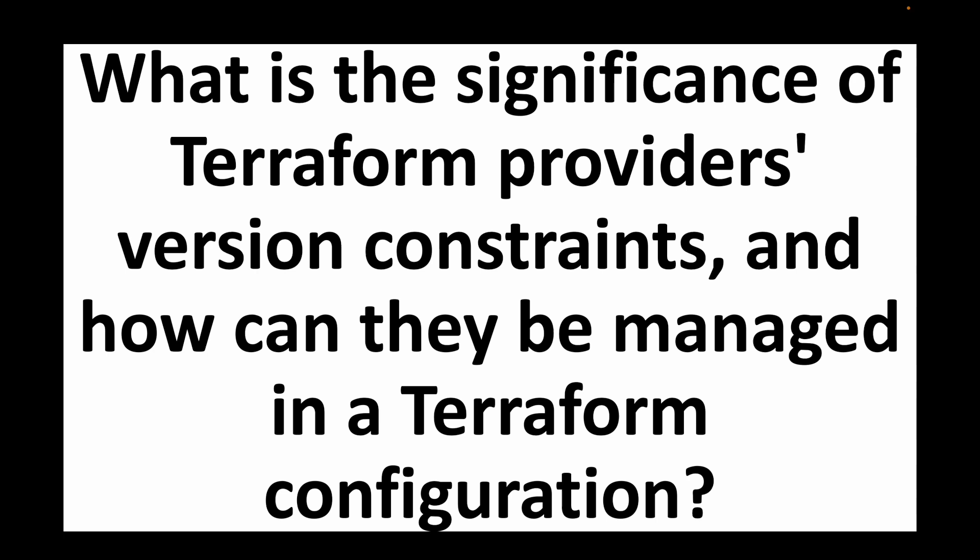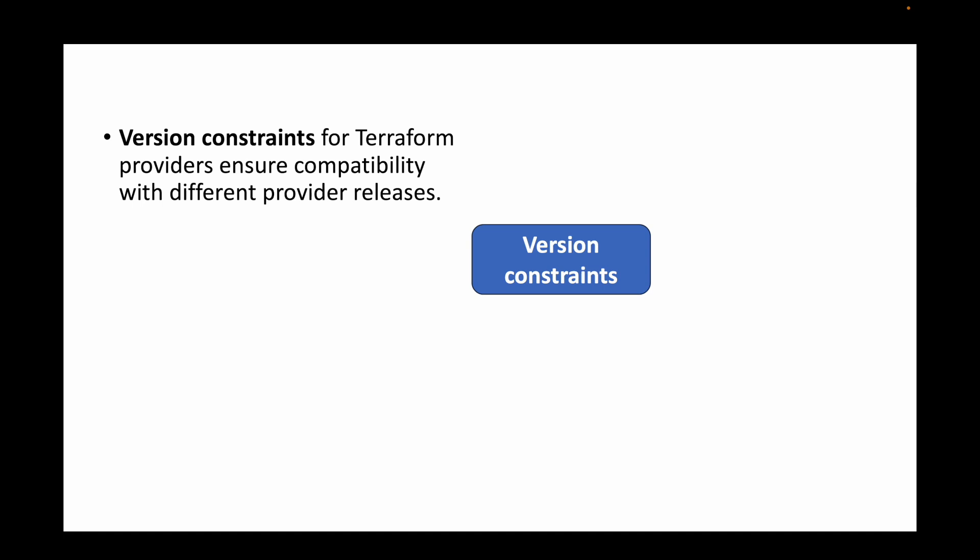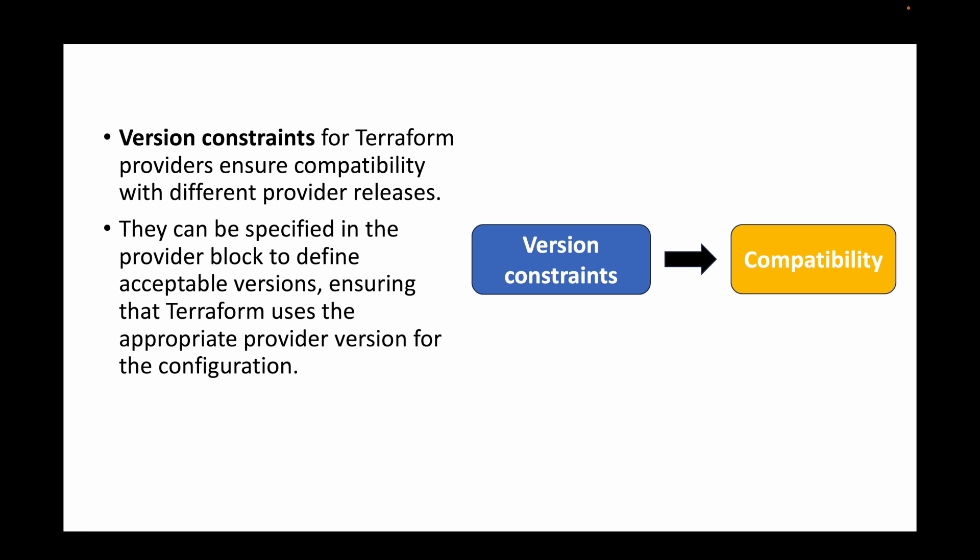The next question is: what is the significance of Terraform provider version constraints and how can they be managed? Version constraints ensure compatibility with different provider releases. For example, if you are on AWS and have a specific Terraform version requirement, you can use version constraints for that. They are specified in the provider block to define acceptable versions, ensuring Terraform uses the appropriate provider version — for example, restricting Terraform to use version 3.2 or 1.2 to create the infrastructure.